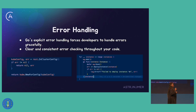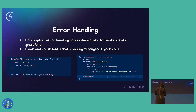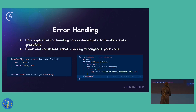Error handling. In Go, errors are values, unlike in most other languages. Go is built in such a way that it forces people to handle errors gracefully. Because of that, when you have a value, you also want to check that there is no error so your value is not a null pointer or something like that. We have clear and consistent error checking throughout our code.